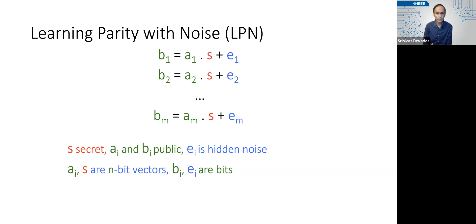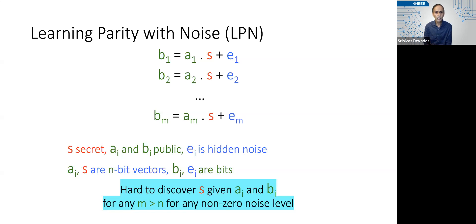And each of the eᵢs and the bᵢs are single bits. And so the LPN problem simply says it's hard to discover s given aᵢ and bᵢ, so you give away all of those for all M, assuming that there's a non-zero noise level associated with the eᵢs. So the eᵢs are essentially unpredictable.